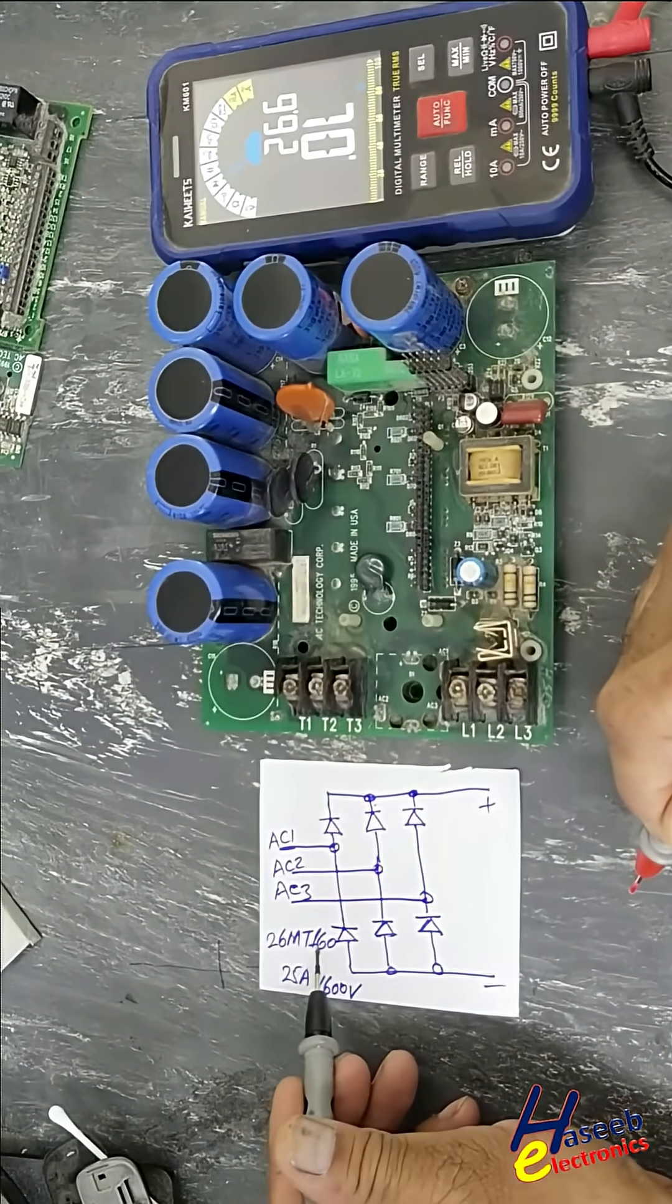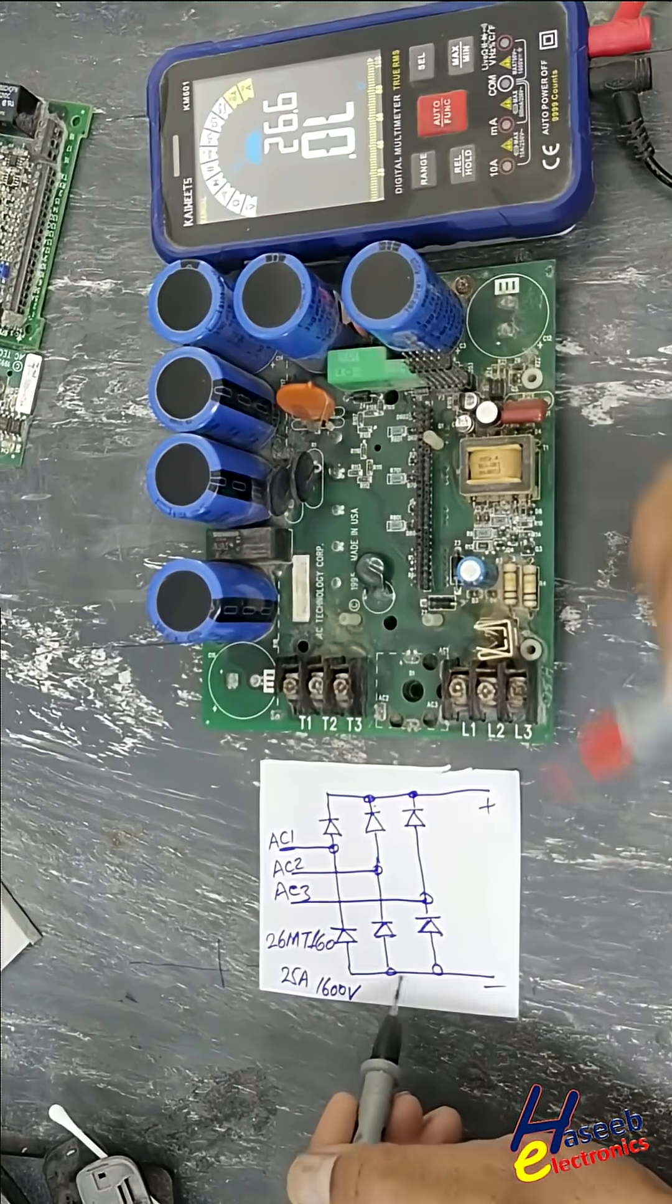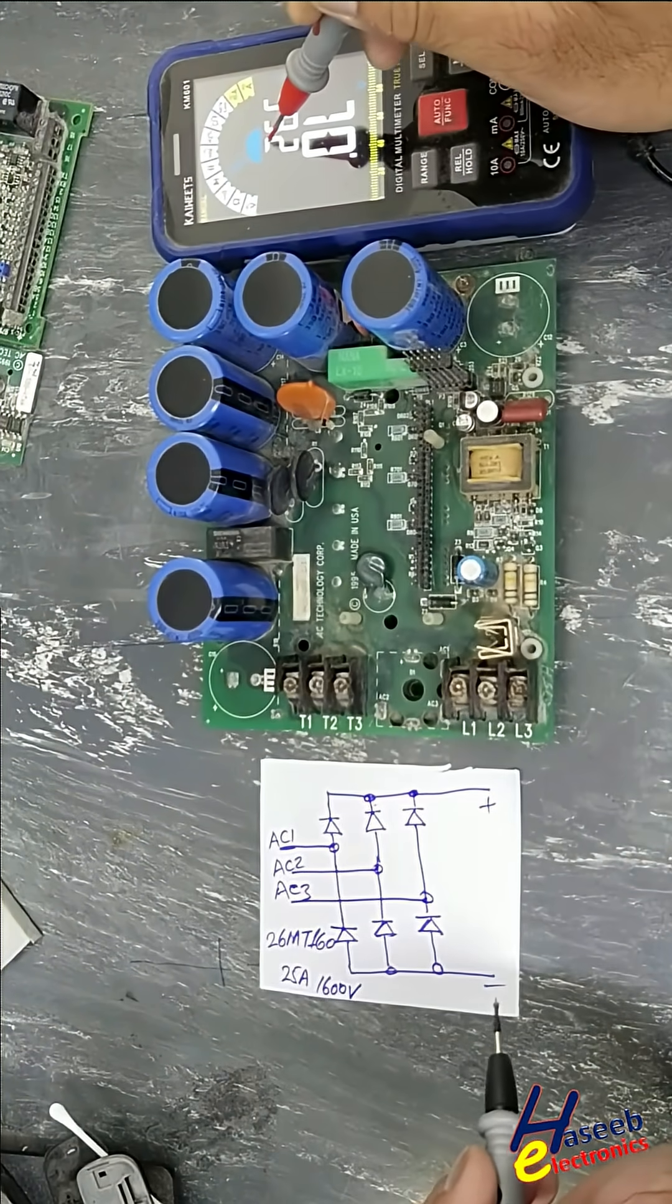This is a 26 MT-160 3-phase bridge rectifier. Set the multimeter to diode mode.